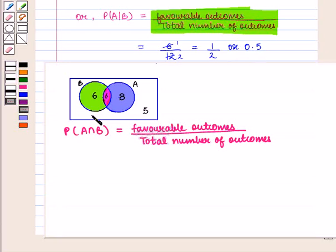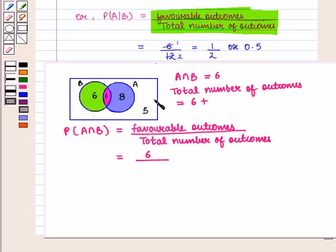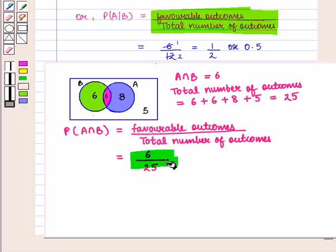Now, the probability of event A intersection B is given by favorable outcomes upon total number of outcomes. The favorable outcomes for event A intersection B is 6, and the total number of outcomes is 6 plus 6 plus 8 plus 5, which equals 25. So probability of event A intersection B is 6 upon 25.